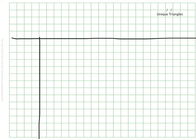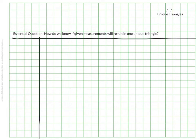This video is going to cover the topic of unique triangles. Be sure the date and topic are at the top of the page. The essential question for this video is: how do we know if given measurements will result in or produce one unique triangle?